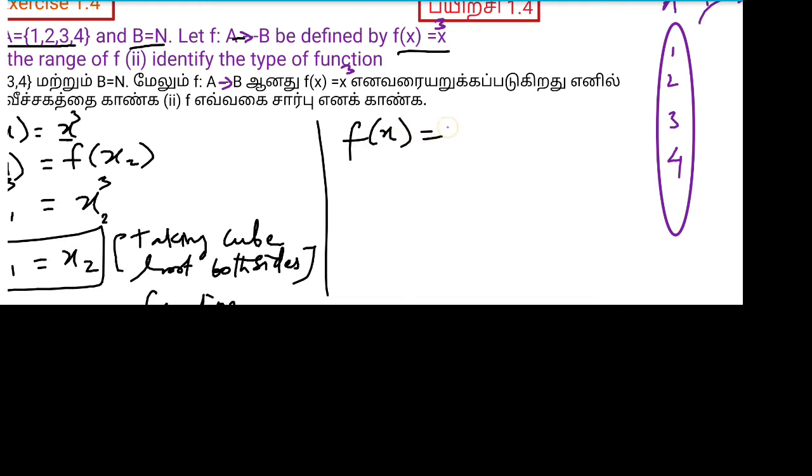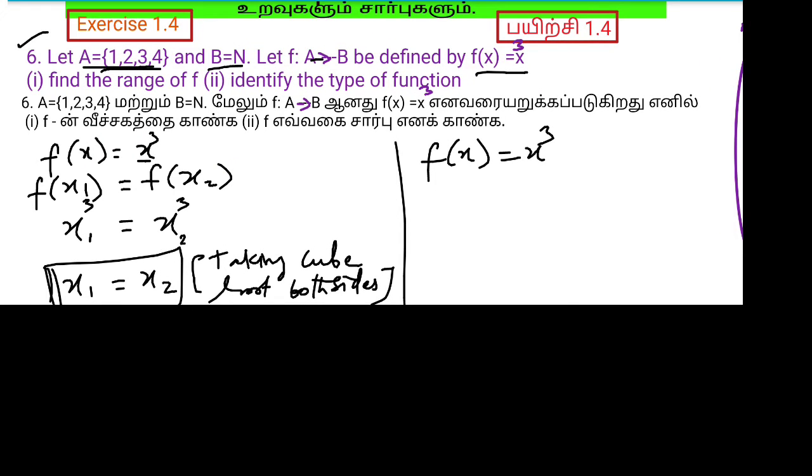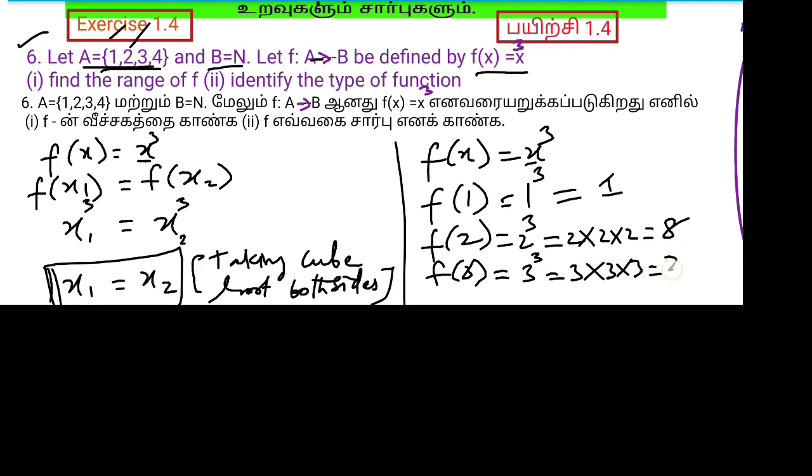Now, function f of x equal to x cube. The set of all elements gives the output value. F of 1 is 1 cube, which is 1. F of 2 is equal to 2 cube, which is 8. F of 3 is 3 into 3 into 3, that is 27.